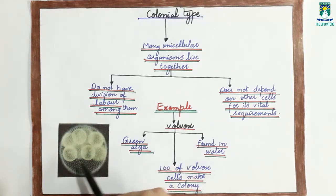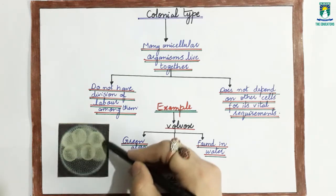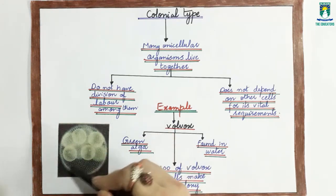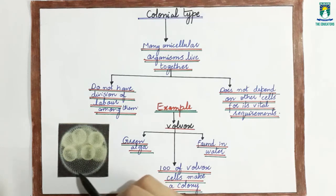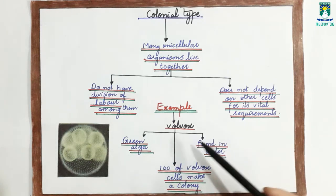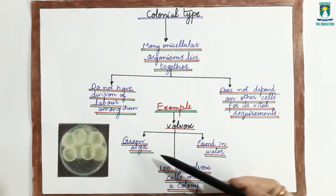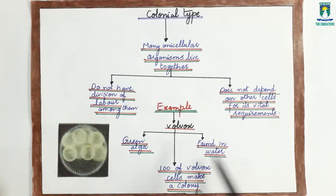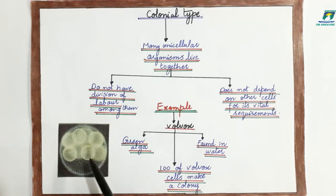As you can see in the diagram, here is a diagram of the volvox colony. The round structures you see are the colonies. There are hundreds of unicellular organism cells present to make the colonies of volvox. Volvox is a green alga and it is found in water. Hundreds of volvox cells or hundreds of unicellular organisms make a colony of volvox, as you can see in the diagram.